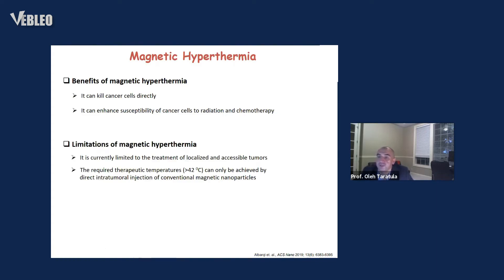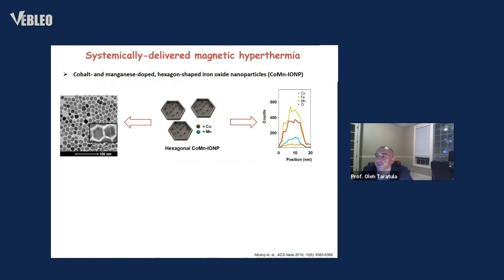The current limitation of magnetic hyperthermia is that currently available nanoparticles have limited heating efficiency. As a result, in order to increase tumor temperature above 42 degrees, you have to inject those nanoparticles directly into the tumor. Our lab tries to overcome this issue and develop nanoparticles for systemic magnetic hyperthermia — meaning we can inject them intravenously, they go to the cancer tumor, and we can use the external magnetic field to kill the cancer tumor. To do that, we developed a new type of nanoparticles.